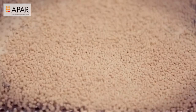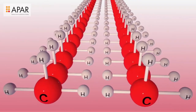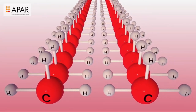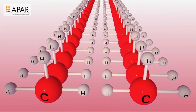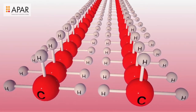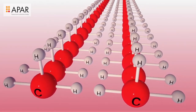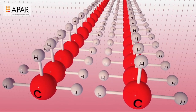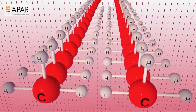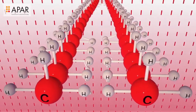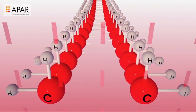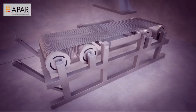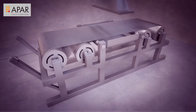The cross-linking process: polymers are made of hydrocarbons having carbon-carbon as strong bonds and carbon-hydrogen as weak bonds. The electron beam irradiation is a process in which the polymer is exposed to a stream of electrons. The high velocity electrons break the weak carbon-hydrogen bonds and create carbon-carbon double bonds, which we call cross-links between molecules.